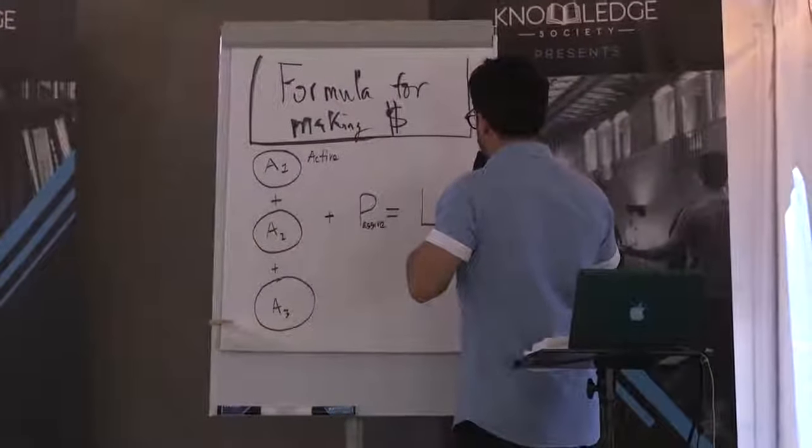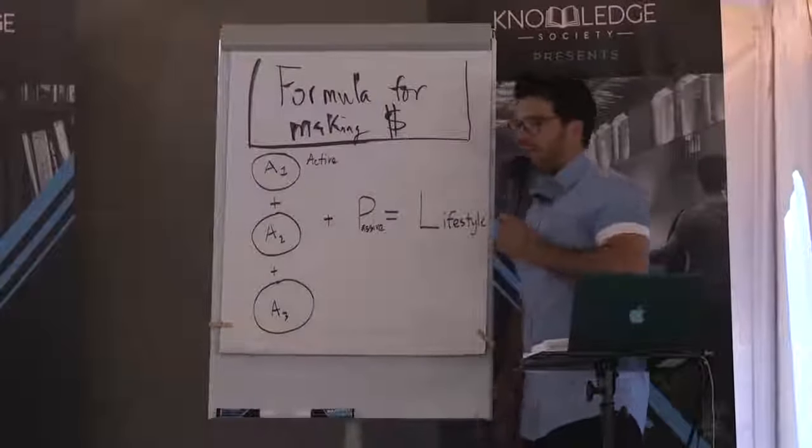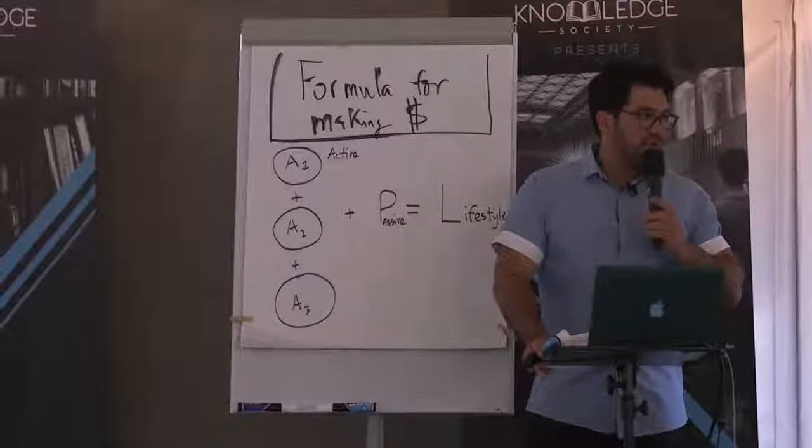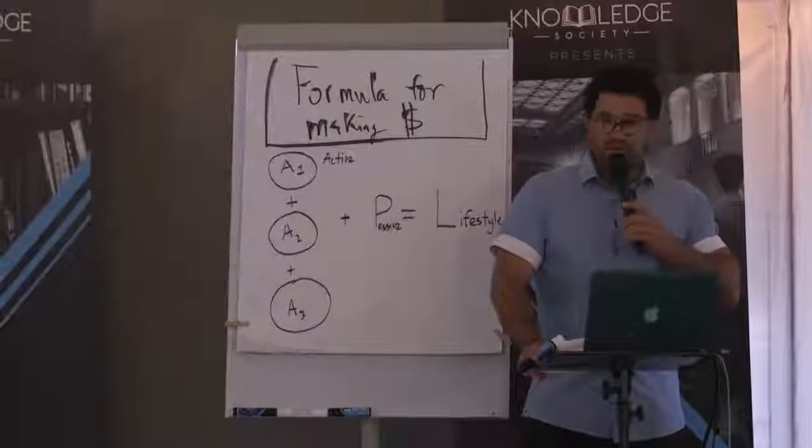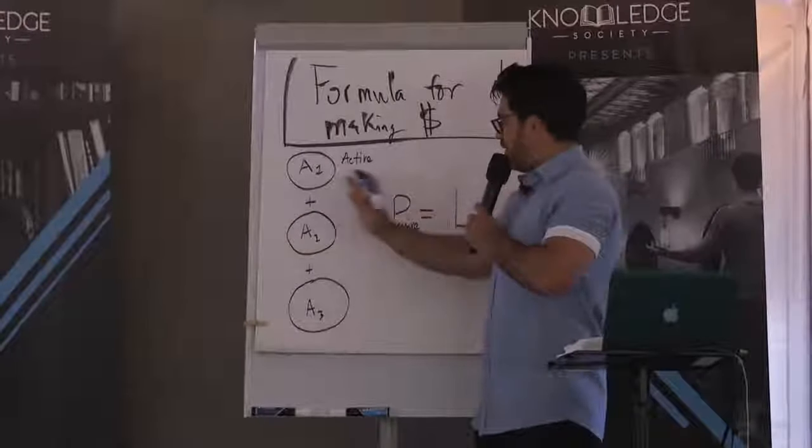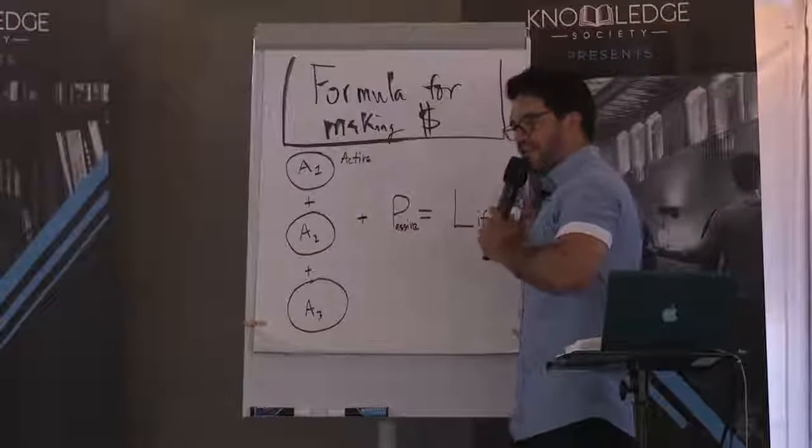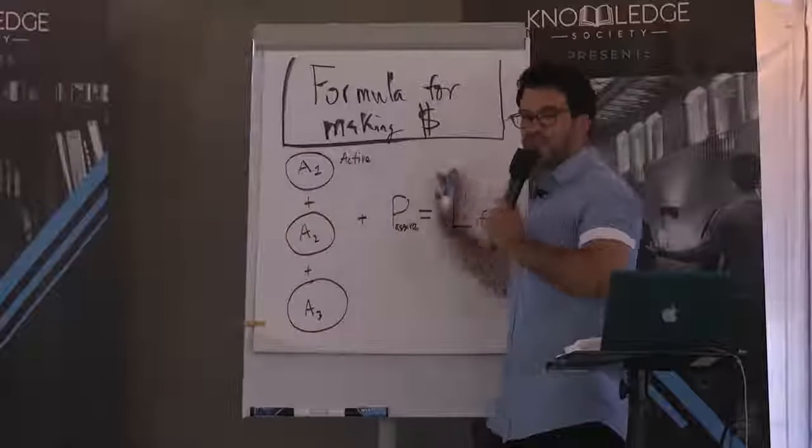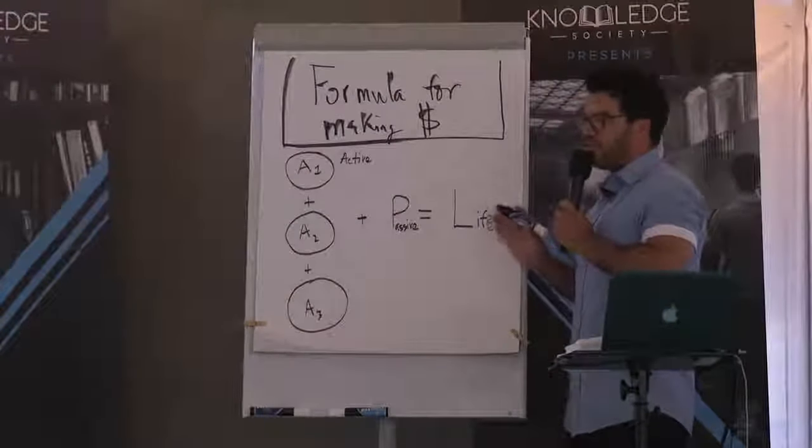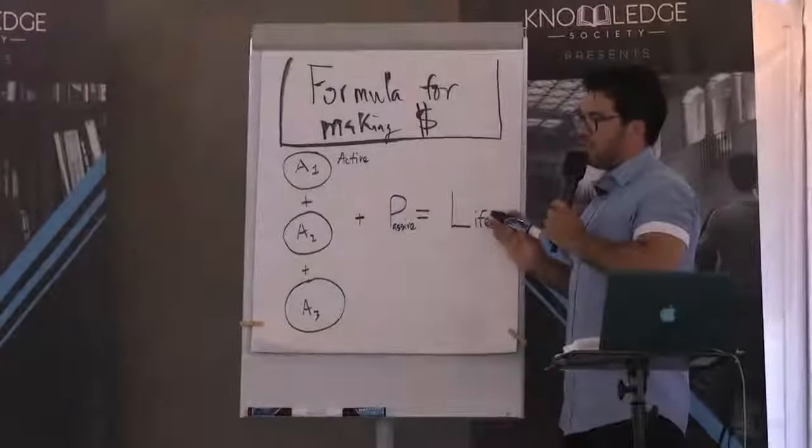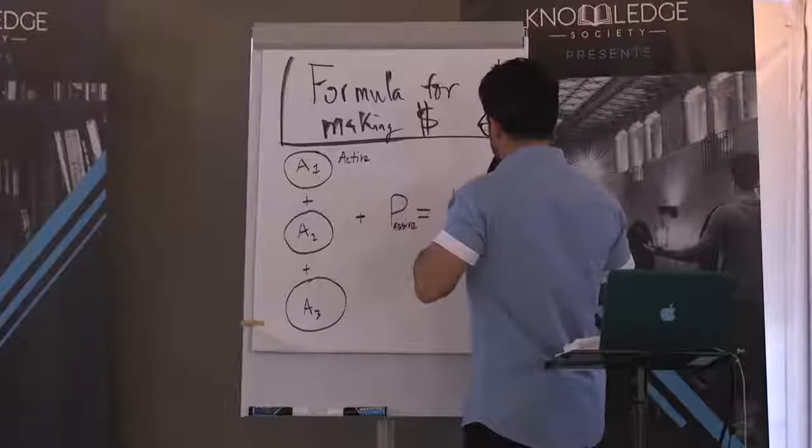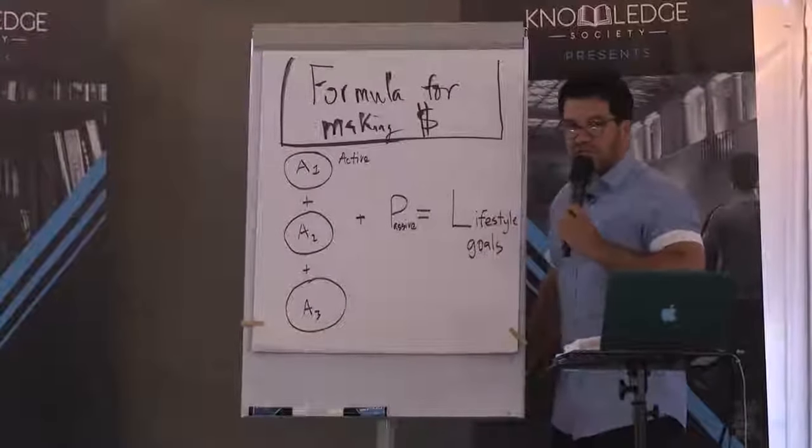P stands for passive and L stands for lifestyle. Now there's something about this math formula that's different than the average math formula. We're going to go the opposite direction. So first you got to write down lifestyle goals.